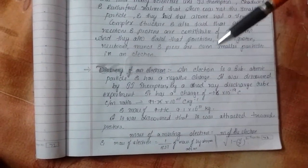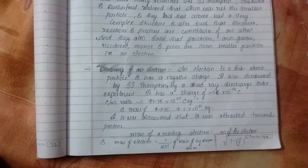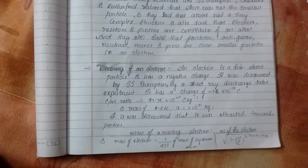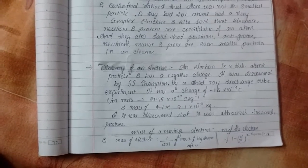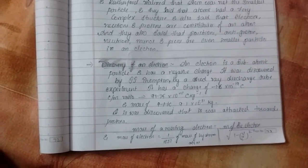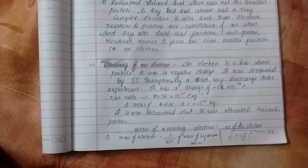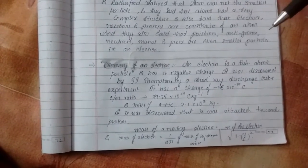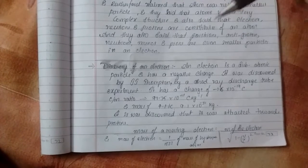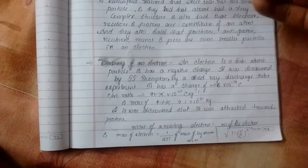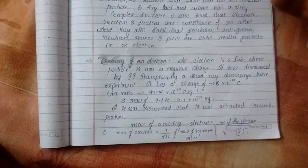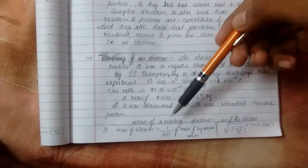And its charge by mass ratio is 1.75 into 10 power 11 coulombs per kg inverse. And mass of it is 9.1 into 10 power minus 31 kg. And it was discovered that it was attracted towards protons because we know that according to Coulomb's law, the negatives attract to the positives and positives attract to the negatives. And note on this formula.